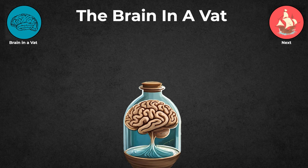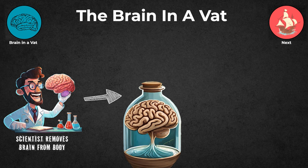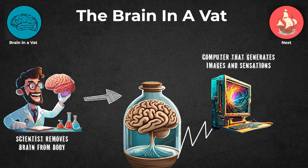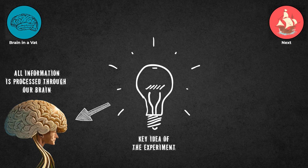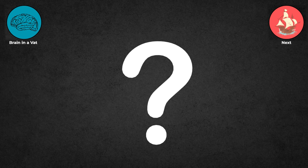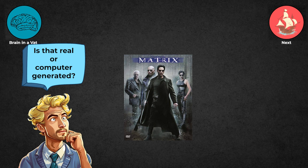The Brain in a Vat asks us to imagine a scenario where a mad scientist removes our brain from our body and places it in a container with fluid. Electrodes have been connected to the brain, and these are connected to a computer that generates images and sensations. The key idea is, since all information about the world is processed through our brain, the computer should be able to manipulate this information to create a simulated reality for the person. This raises the question, how do we know if our experiences are real or just computer-generated illusions? Inspired by the movie The Matrix, this experiment makes us think deeply about the nature of reality and what it means to be human.